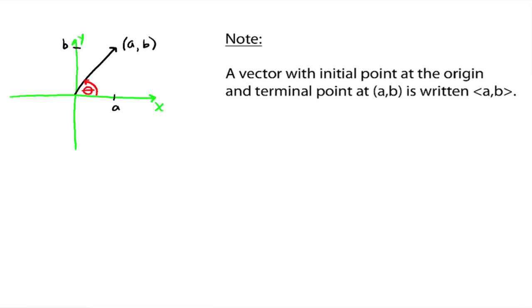Now let's move vectors to the rectangular coordinate system. Let's get your x and y axis. We've got a vector starting at the initial points at the origin. It goes out here to AB. So make a little note. A vector with the initial point at the origin and the terminal point at AB is written in this notation. Everybody see this? Right there.